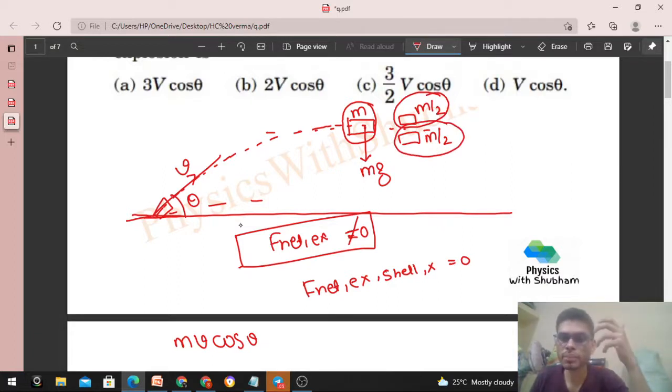Now we will see that one piece retraces its path, meaning you can see it retraces the path. If one part retraces the path, its velocity will be V cos theta in the backward direction. Let me use a different color. We will see that this part retraces its path, meaning its velocity is V cos theta. Now here is V cos theta.